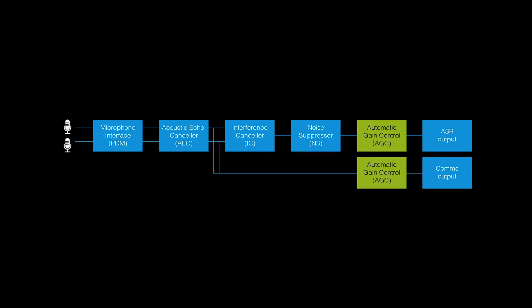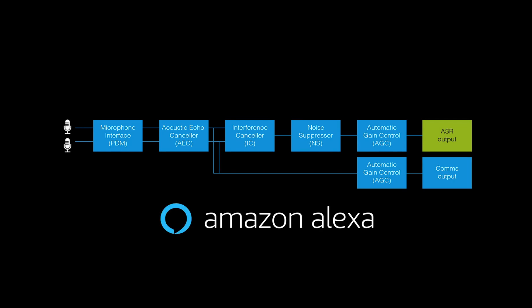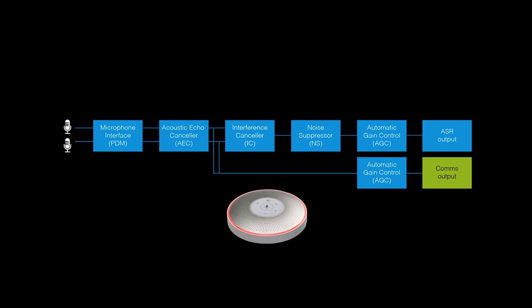The fourth block is automatic gain control. This balances the signal volume — for example, making a quiet voice louder. There are two output parts: one optimises the signal for a speech recognition service like Amazon Alexa, and the other optimises it for comms output to support conference calling.